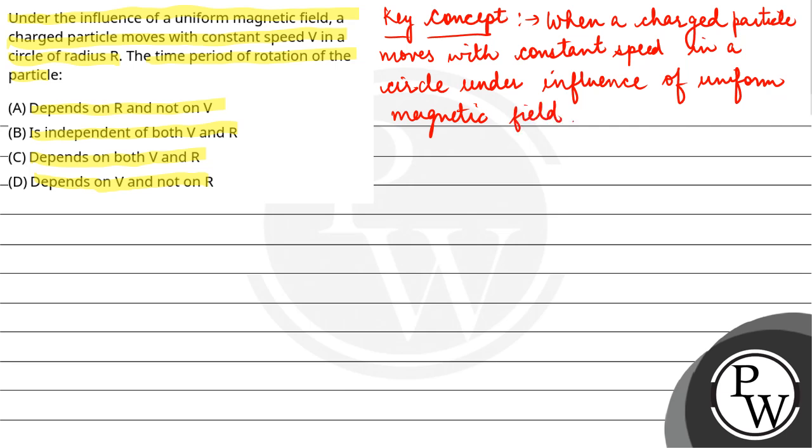Then the centripetal force experienced by the charged particle is equal to the force on charged particle by magnetic field. That means Mv²/R = QvB. Here M is the mass of the particle, V is the velocity, constant velocity of the particle, R is the radius of the circle, Q is the charge of the particle and B is the uniform magnetic field.